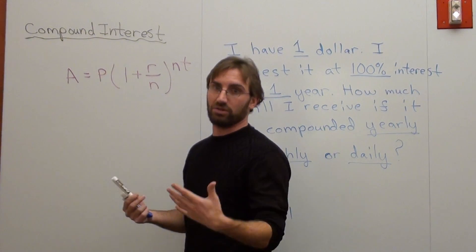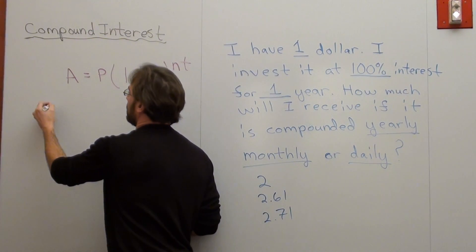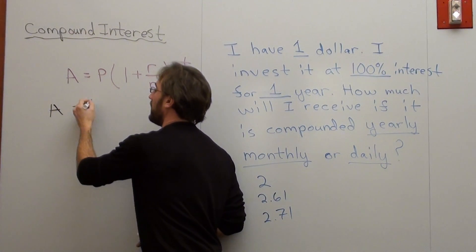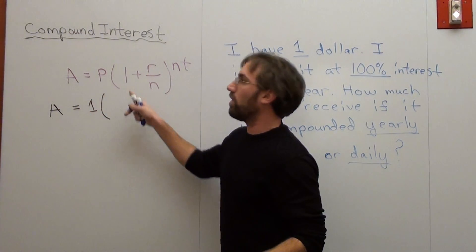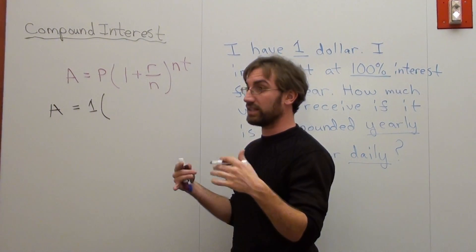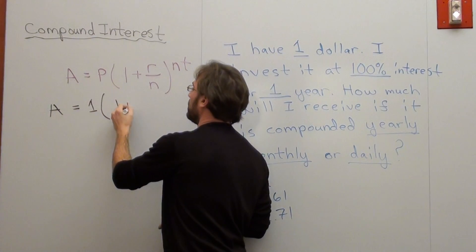So A is basically going to be the total answer. Suppose that stands for annuity. P is the principal, which is $1, parenthesis, 1, because it's an exponential growth problem. We start with 100%. We assume that it's going to stay at least at 100%. Plus,